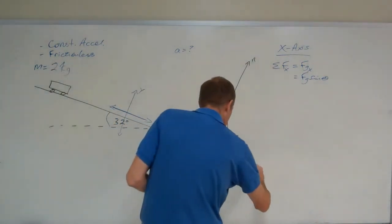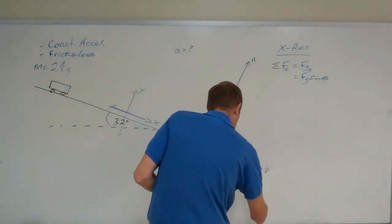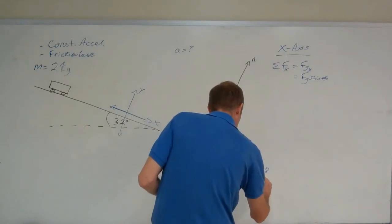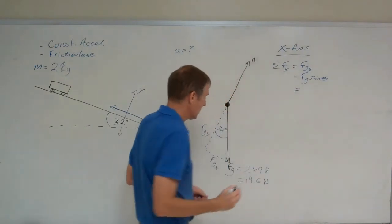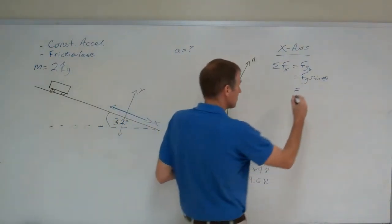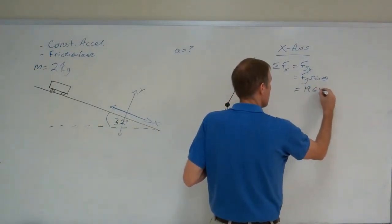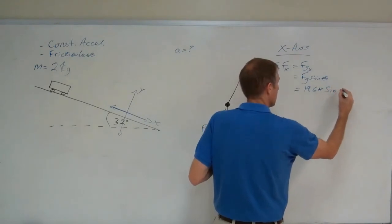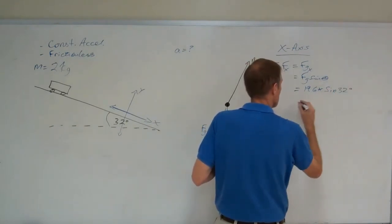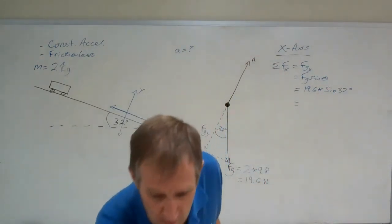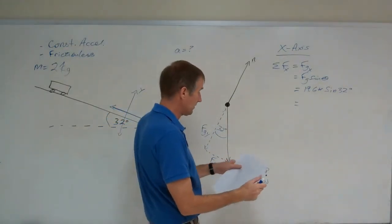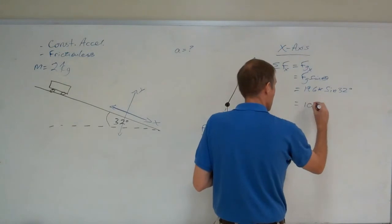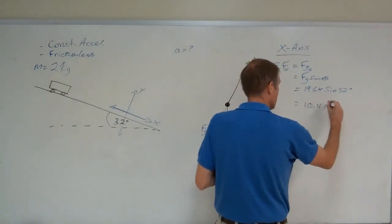FG equals, it's two kilograms, so two kilograms times 9.8 equals 19.6 newtons. So FGX equals 19.6 times the sine of 32 degrees, which came out to be 10.4 newtons.